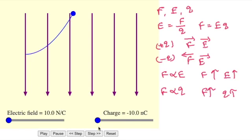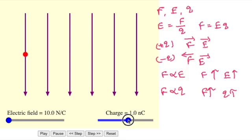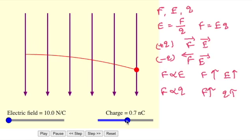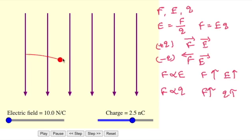Now let us check the same for a positive charge. First, let me take a positive charge of 1 nanocoulomb — this is the deflection; it is coming up to the end. Now I will increase the magnitude of the positive charge. The deflection is more, which means when I increase the magnitude of charge, the force also increases.